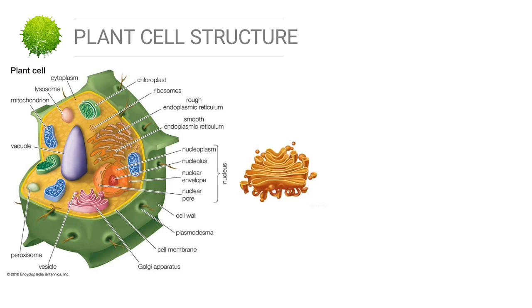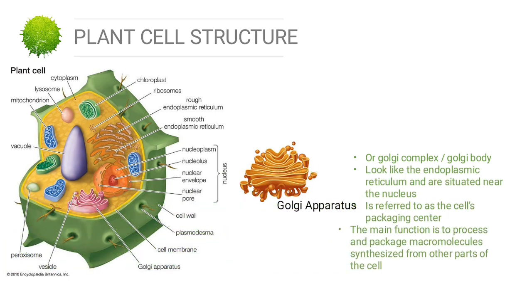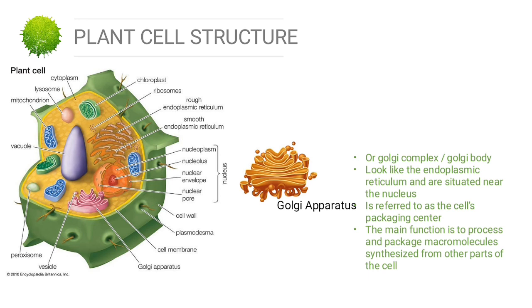The next plant cell organelle is the Golgi apparatus, also called Golgi complex or Golgi body. It looks like the endoplasmic reticulum and is situated near the nucleus. It is referred to as the cell's packaging center. Its main function is to process and package macromolecules synthesized from other parts of the cell.